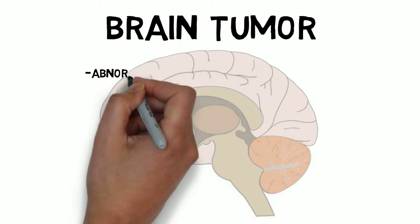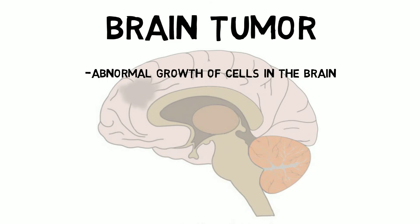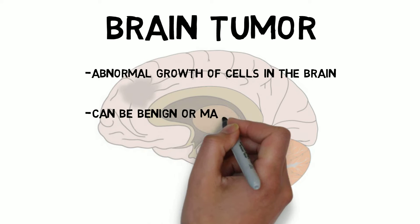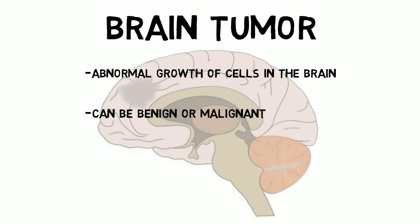A brain tumor is an abnormal growth of cells that occurs in the brain. Brain tumors, like other tumors, can be benign or malignant. Malignant tumors grow much more rapidly than benign tumors and frequently spread into surrounding brain tissue, whereas benign tumors tend to grow slowly and do not typically spread. Only malignant tumors are considered cancerous, but a benign brain tumor can still be problematic, as its growth can impact neighboring brain tissue.